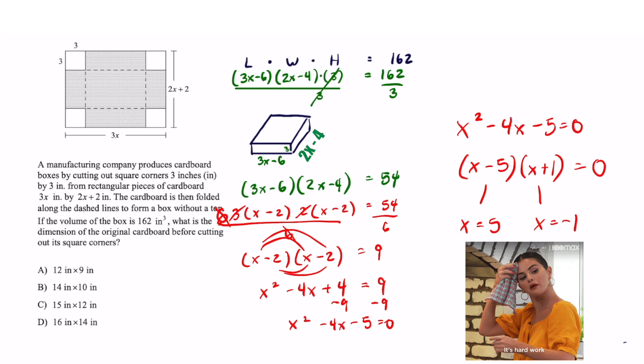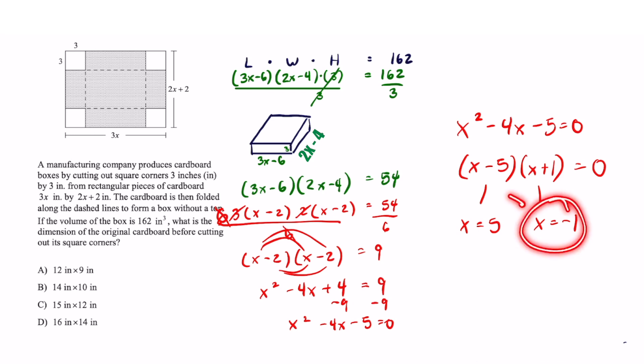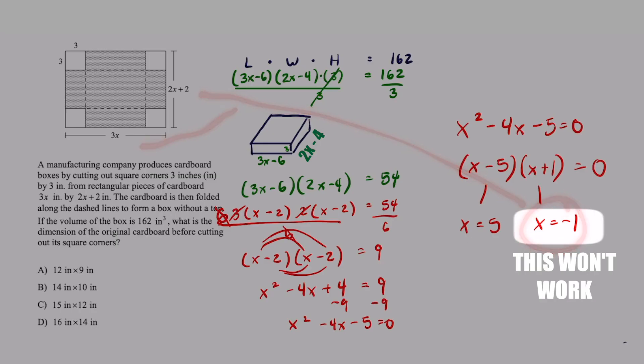Only one of these makes sense because if I plug in a negative 1 into this expression I'm going to get negative dimensions. So we're not going to use that one.